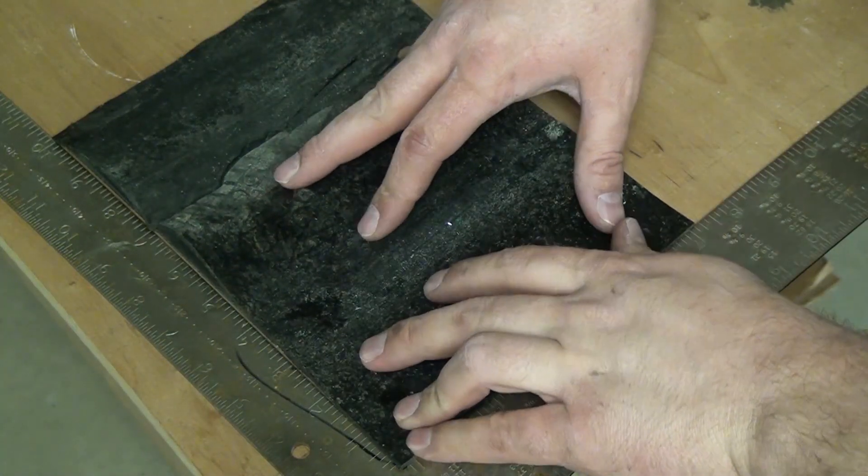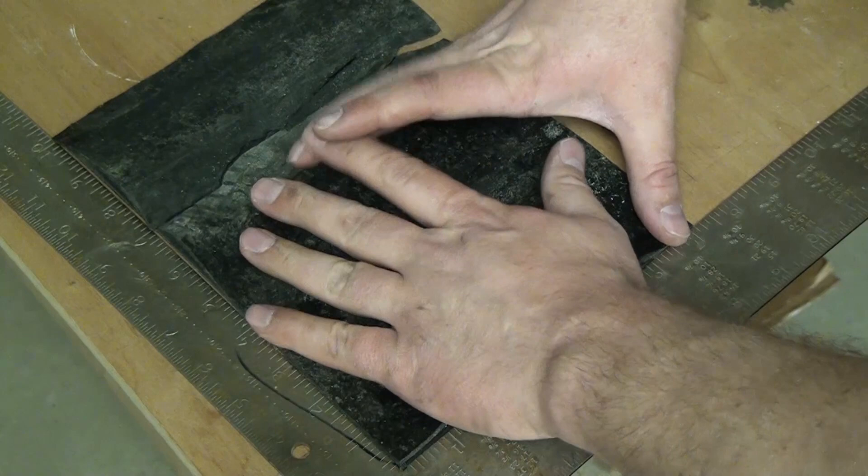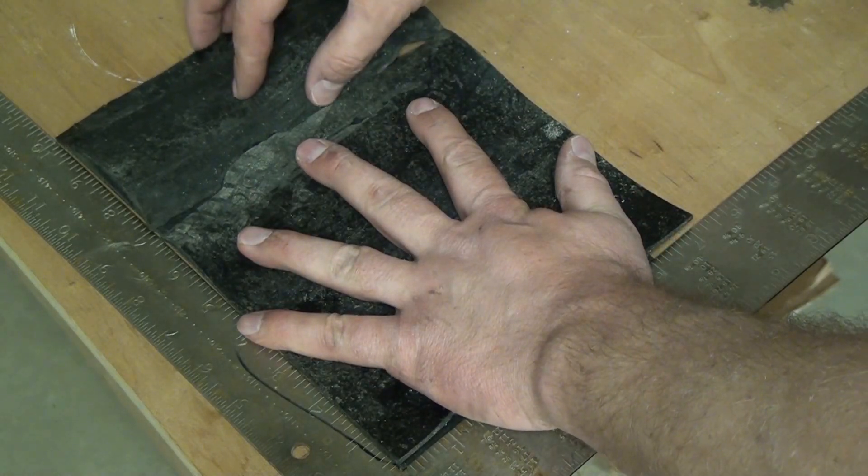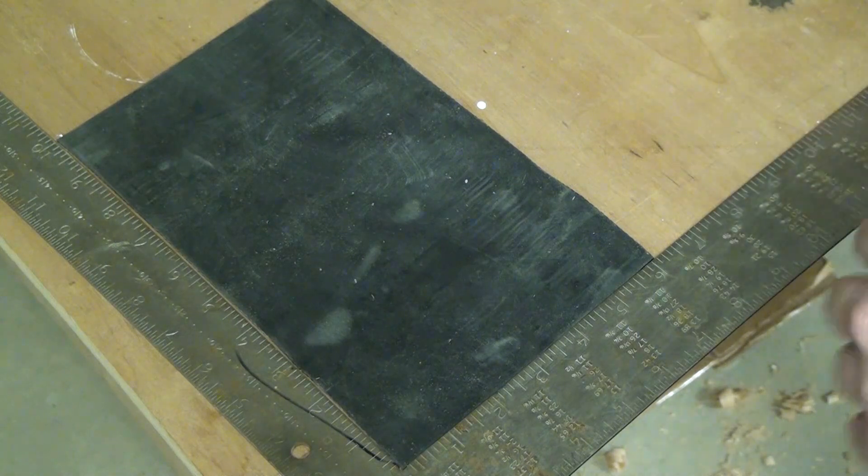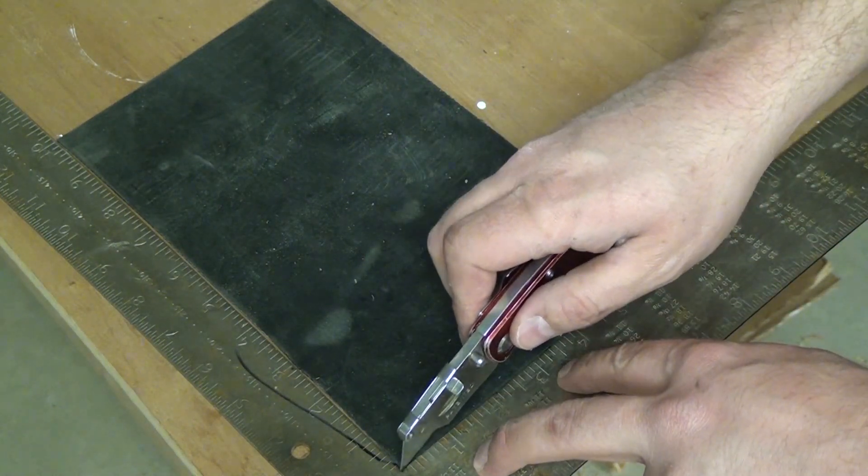Laying the old material on the new stuff, I was able to determine the length, and then using a square and a razor knife, make several light passes and it'll cut right through.